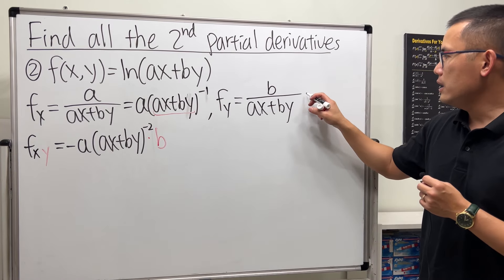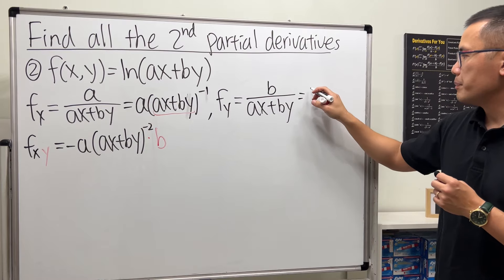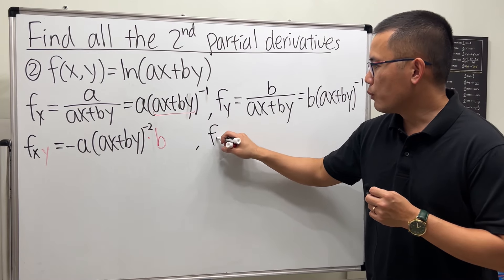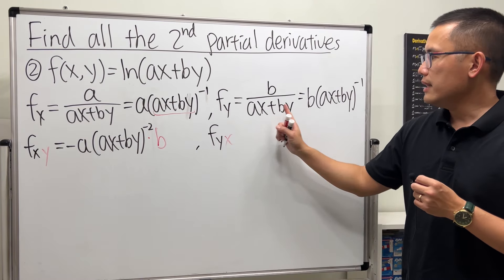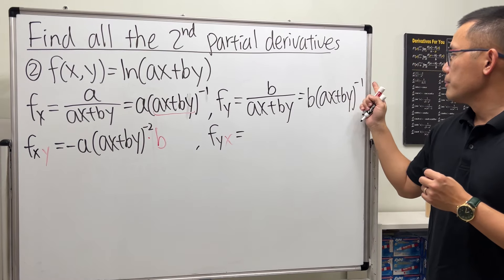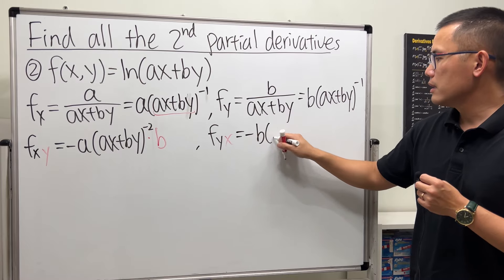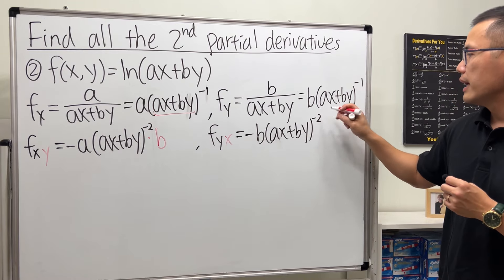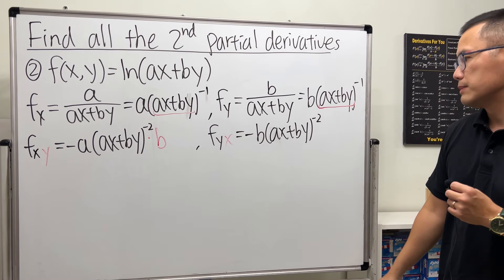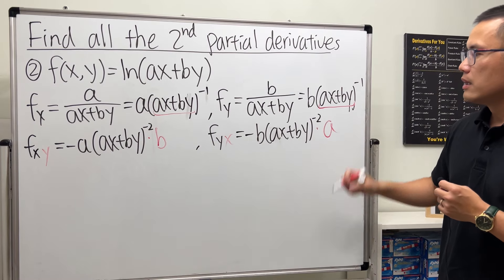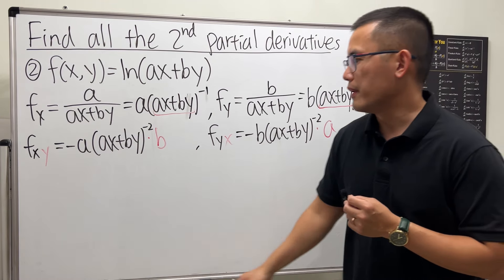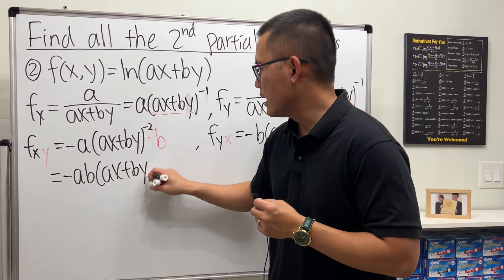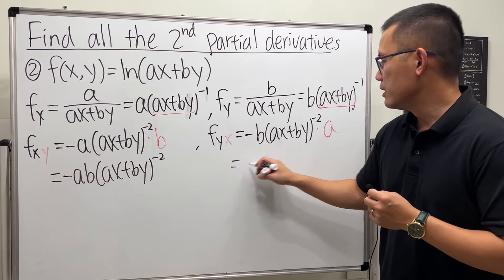For fyx, we write fy as b times (ax + by) to the negative one. Differentiating with respect to x, put the power to the front to get negative b times (ax + by) to the negative two, then multiply by the derivative of the inside with respect to x, which gives a. Notice both fxy and fyx equal negative ab times (ax + by) to the negative two — they are the same.